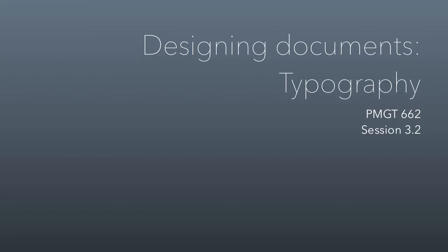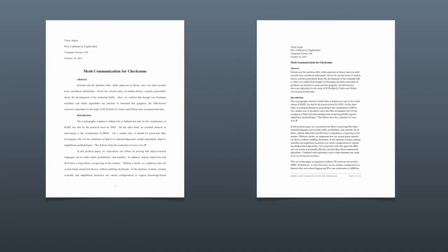Welcome to session 3.2. This is all about typography. I'm bringing back two documents I showed you on the second day of class. What you see on the left is what's normally produced in an academic setting, and what you see on the right is what the rest of the world does. Part of my job in this class is to get you to stop doing academic formatting and start using professional formatting. These two documents are really simple — there are no graphic elements, just type. What's really interesting is that the differences between them all boil down to typography.